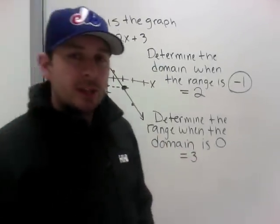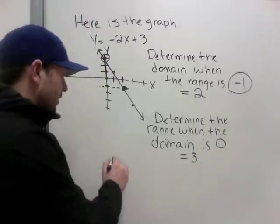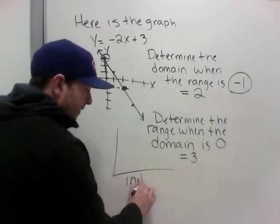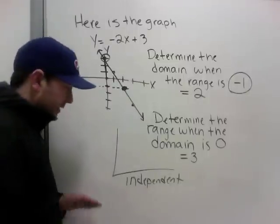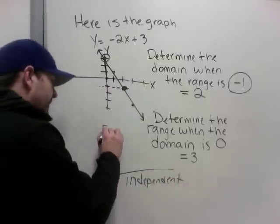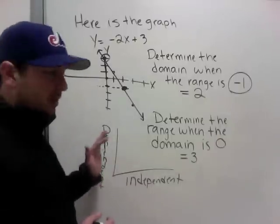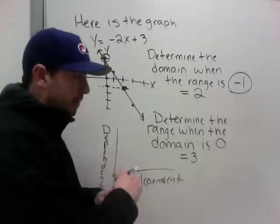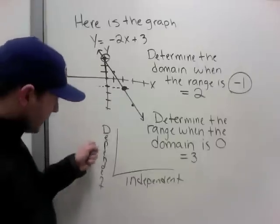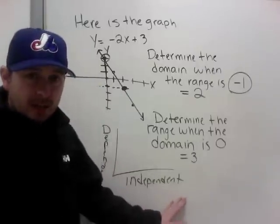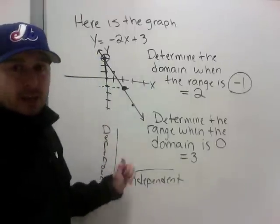Before we go on — a reminder about independent and dependent variables. The independent variable is the domain, usually time. The dependent variable is the range — it depends on the independent variable. For example, how much time has gone by determines how high you are, or how much money you've made.